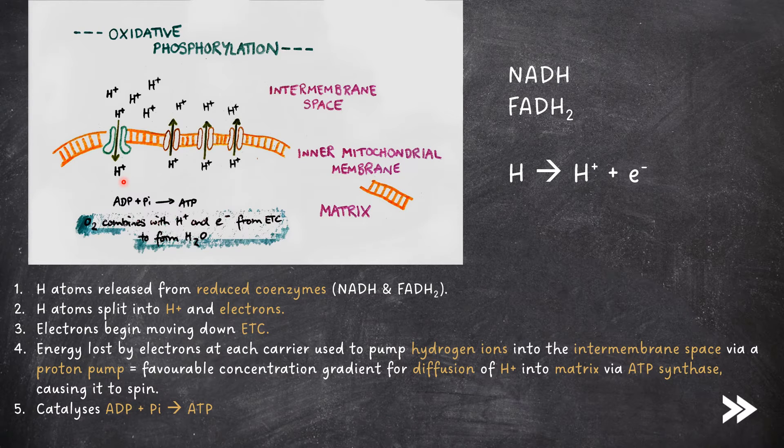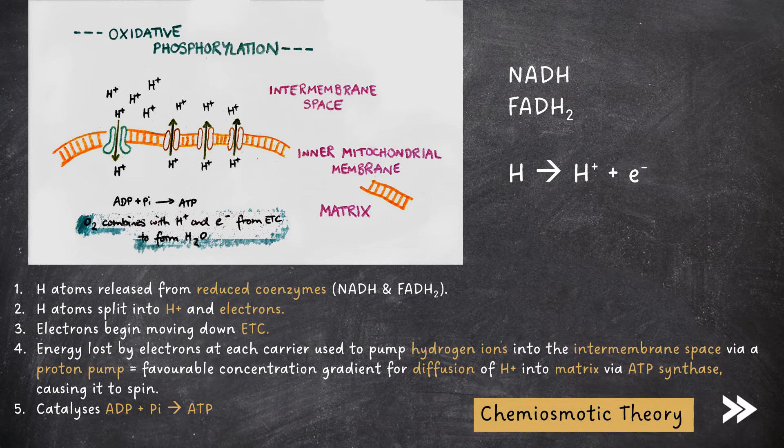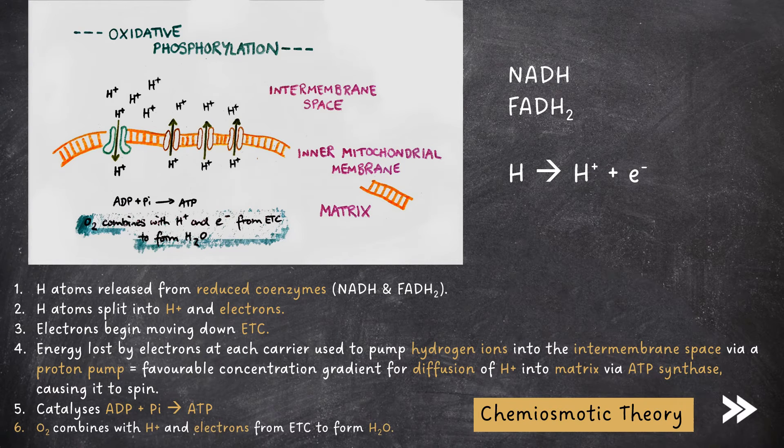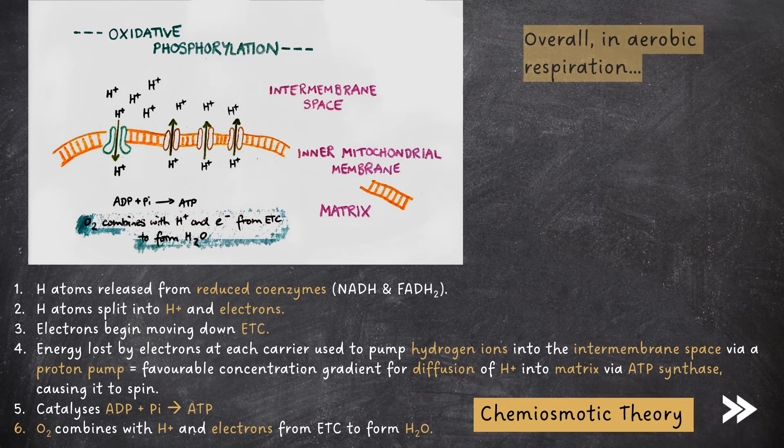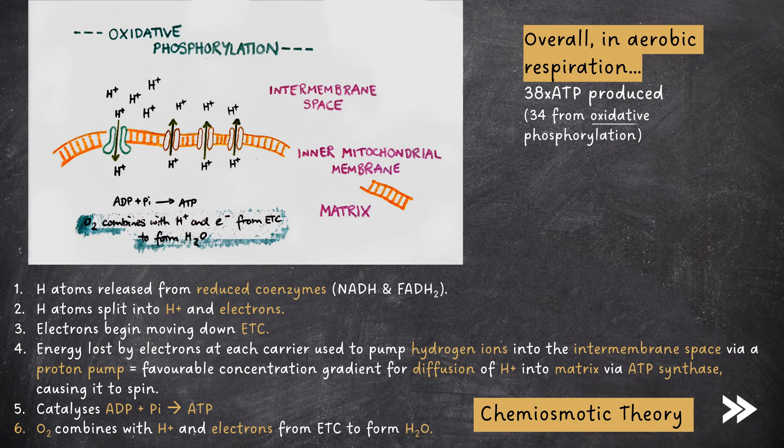This catalyzes the reaction between ADP and PI to form ATP. Remember, as in photosynthesis, the process of ATP being produced by electrons moving down an electron transport chain and the pumping of hydrogen ions and their diffusion through ATP synthase, all of this together is known as the chemiosmotic theory. Finally, oxygen combines with hydrogen ions and electrons from the electron transport chain to form water. Overall, in aerobic respiration, 38 ATP molecules are produced, 34 of which come from this final stage of oxidative phosphorylation.